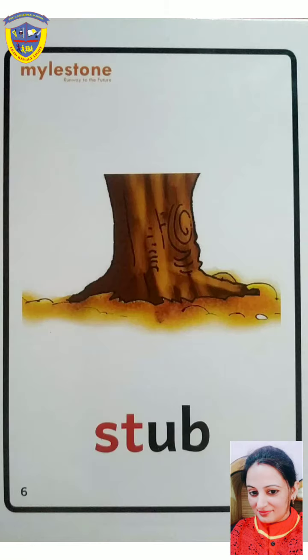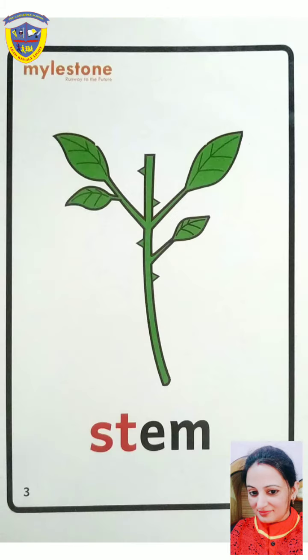First picture is stub. Stub means a short part remaining on a stamp or trunk.